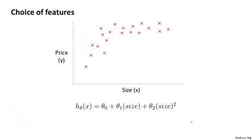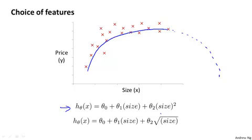Finally, here's one last example of how you really have broad choices in the features you use. Earlier we talked about how a quadratic model like this might not be ideal, because maybe a quadratic model fits the data okay, but the quadratic function goes back down, and we really don't want housing prices that go down to predict that as the size of the house increases. But rather than going to a cubic model, you have maybe other choices of features, and there are many possible choices, but just to give you another example of a reasonable choice. Another reasonable choice might be to say that the price of a house is theta zero plus theta one times the size, and then plus theta two times the square root of the size. So the square root function is this sort of function.